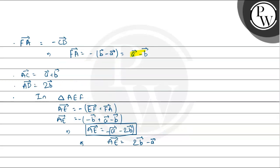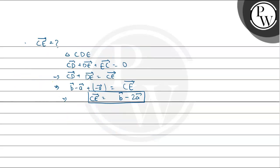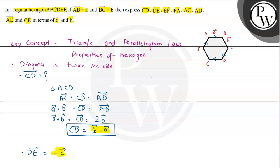To summarize all results: DE = -a, EF = -b, AC = a + b, AD = 2b, AE = 2b - a, and CE = b - 2a. I hope you understood it well — best of luck!